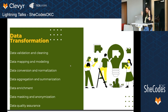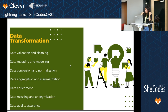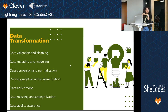The logic part includes validation, mapping, modeling, data normalization, and security. The actual work happens in the data transformation part of it.